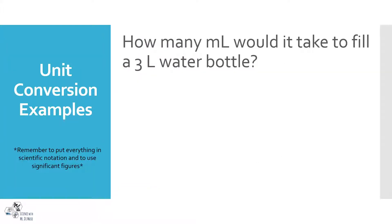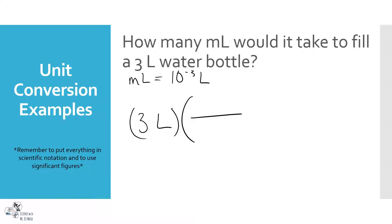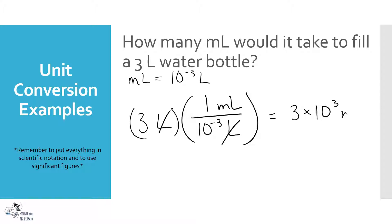How many milliliters would it take to fill a three-liter water bottle? Pause the video and try it on your own. The conversion factor is 10 to the negative three. I have a 3-liter water bottle; I put liters on the bottom and milliliters on the top, cancel the liters, and end up with 3 times 10 to the 3 milliliters, or 3,000 milliliters. That makes sense.